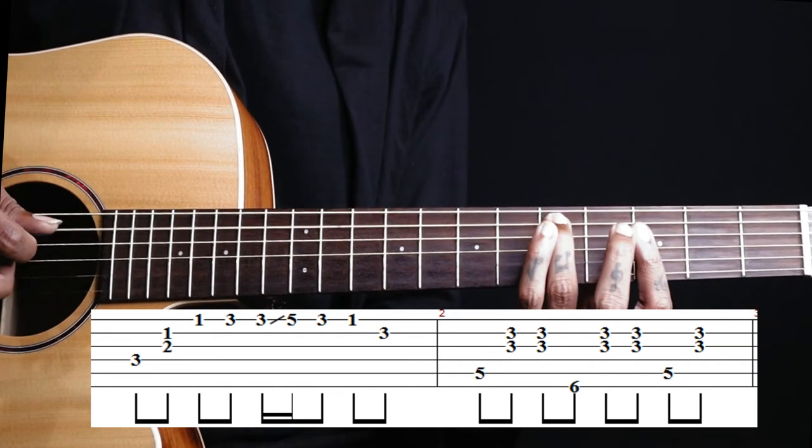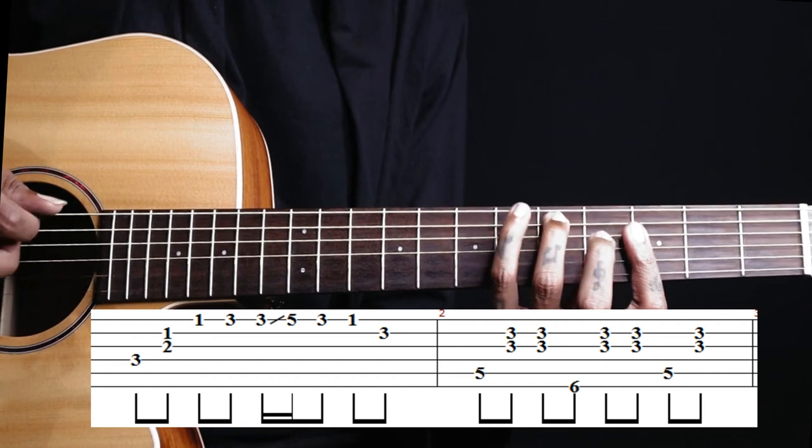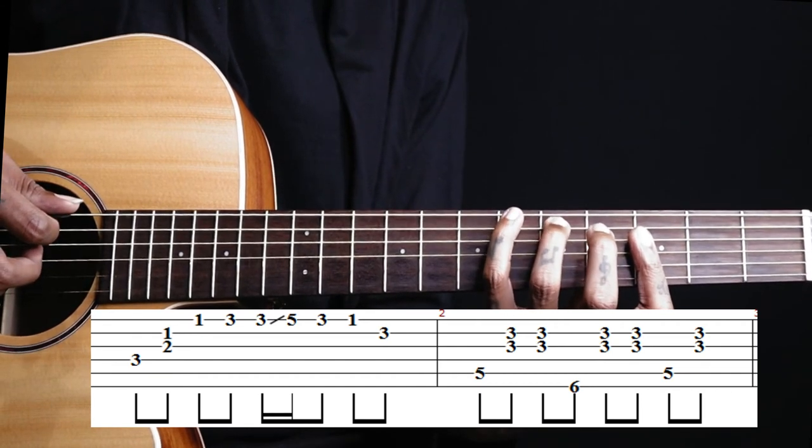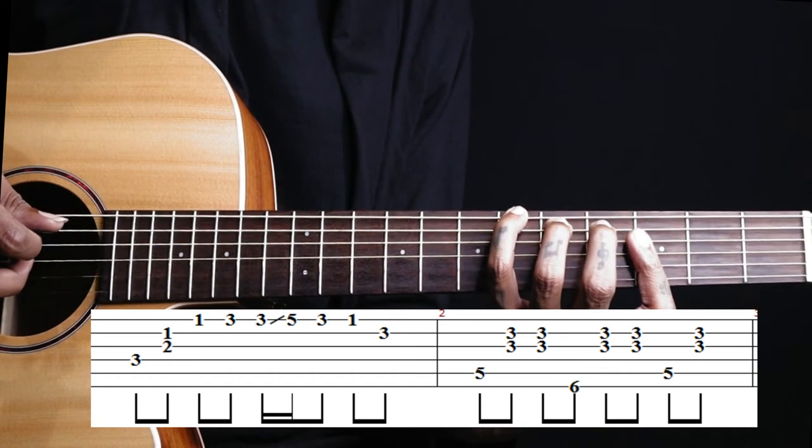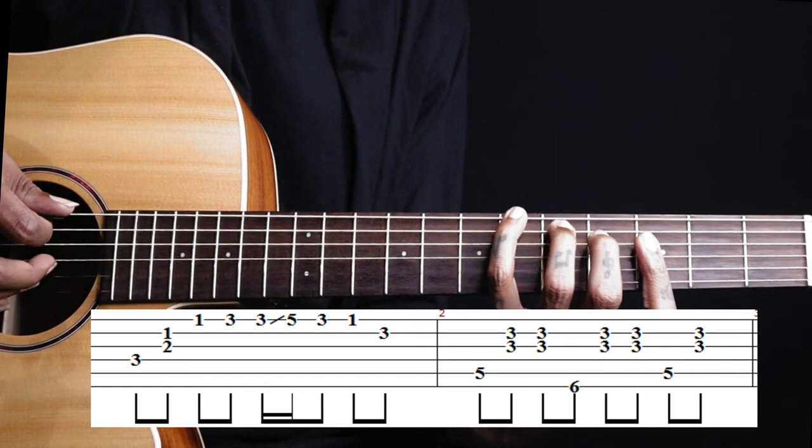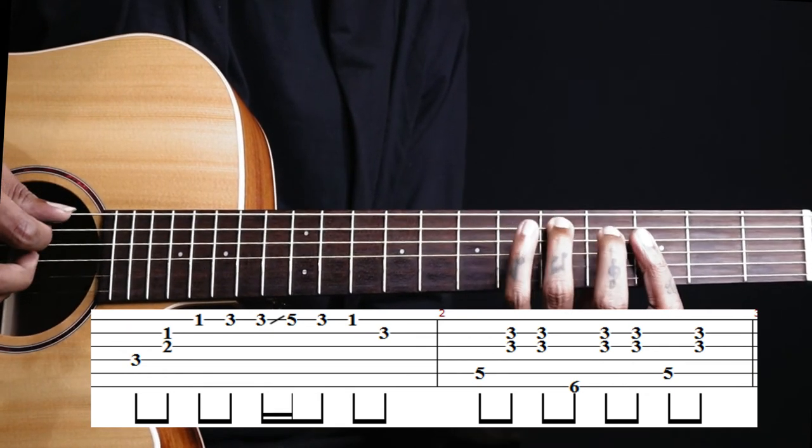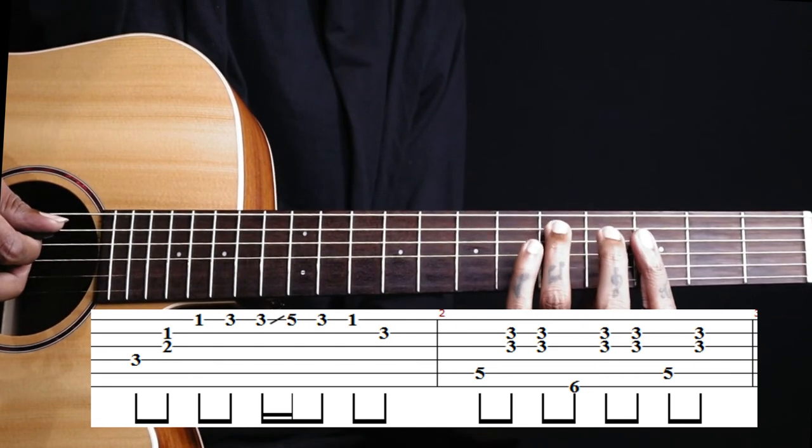And I pluck 5th string and 3, 2 together. And add your little finger as a bass note on the 6th string, 6th fret as Bb. Then again pluck the 6th string and go to 3 and 2 again. So we are adding a little bit of rhythm kind of thing here.